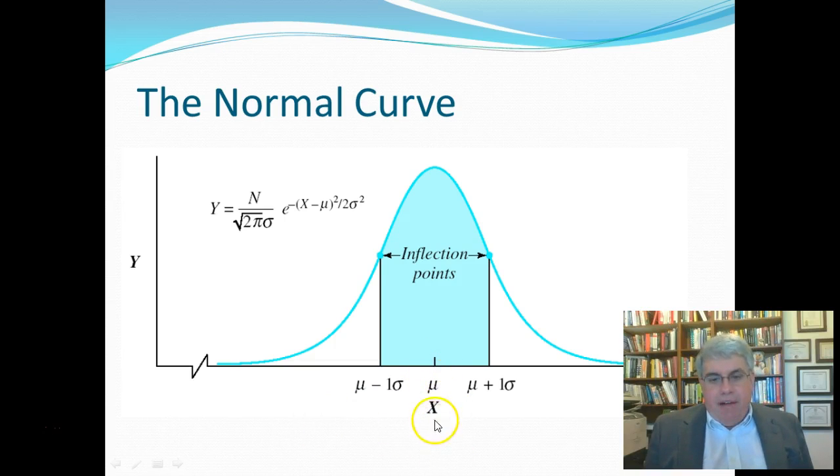But the important things to remember are what causes its shape. Mu, the average, is always what's going to be in the middle point there. And then along the sides, how fat it is, is determined by sigma, the standard deviation. And sigma actually is the width from the midpoint to the part of the line that's actually perfectly straight. That's called the inflection point.